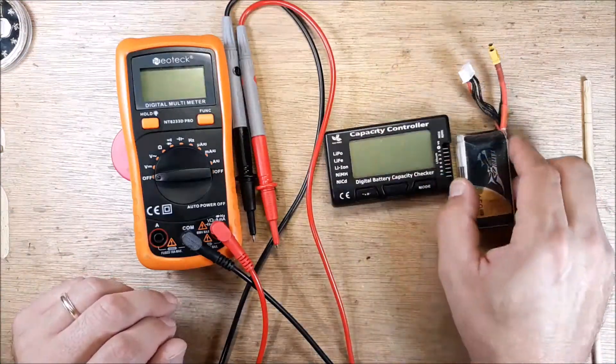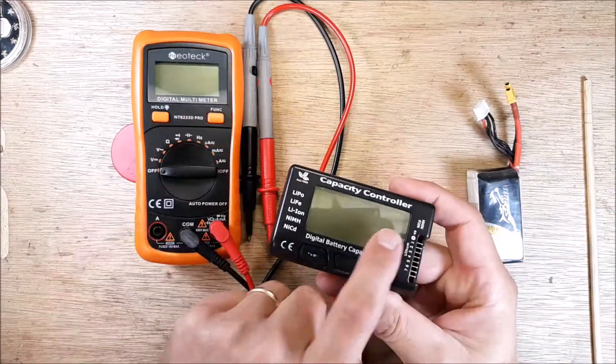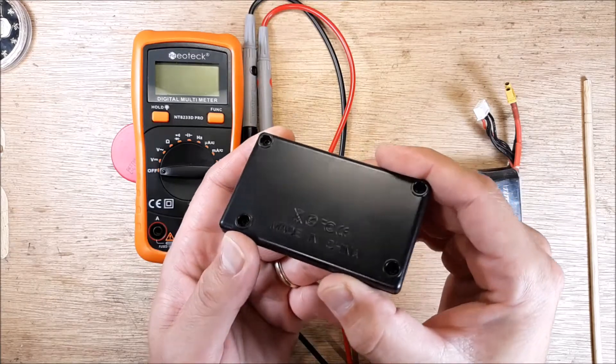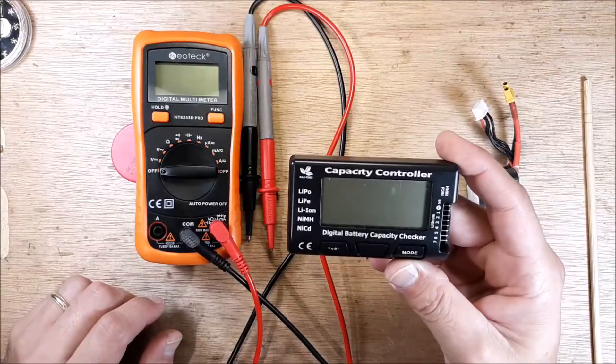This is a 4S LiPo and this is a battery checker. You can see all the print on the back, it just simply says made in China, but there are a lot of ripoff versions of this.